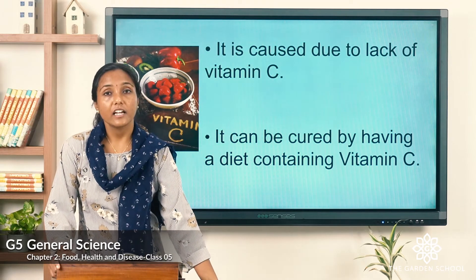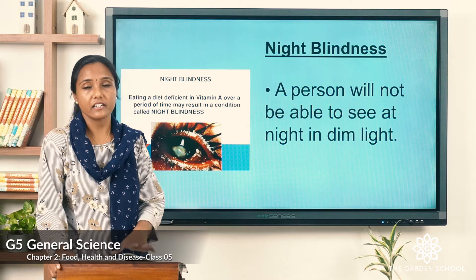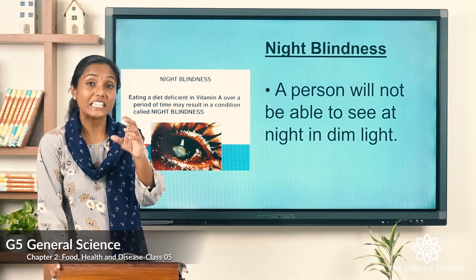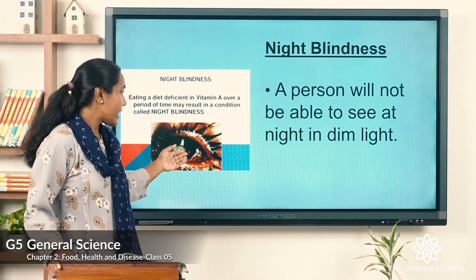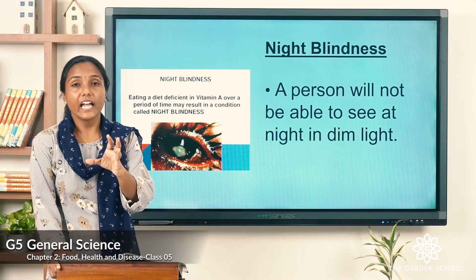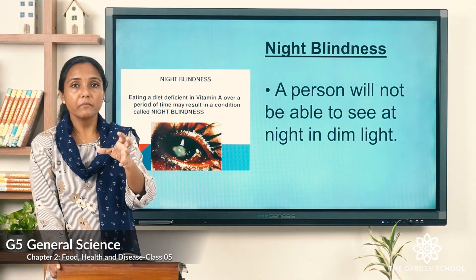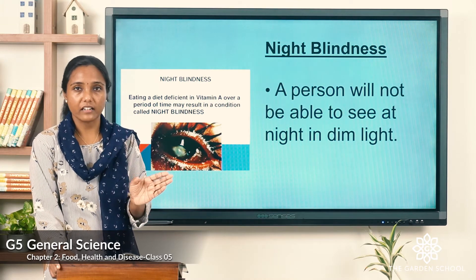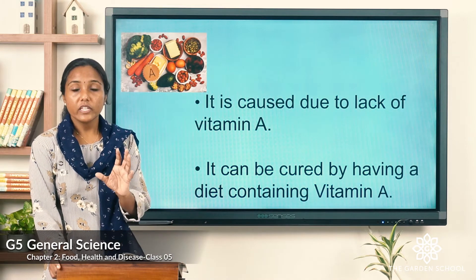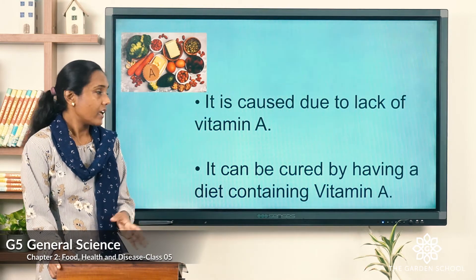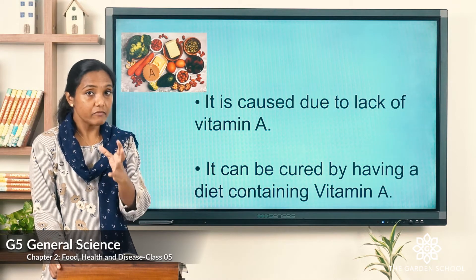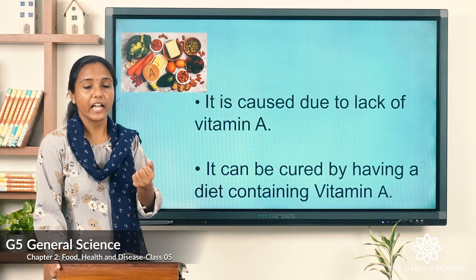The next deficiency disease is night blindness. A person suffering from night blindness will not be able to see in dim light at night — during the daytime they can see, but in dim lights they cannot see clearly. Night blindness is caused due to lack of vitamin A. If your diet is lacking vitamin A, you will suffer from night blindness, and it can be cured by eating food rich in vitamin A.